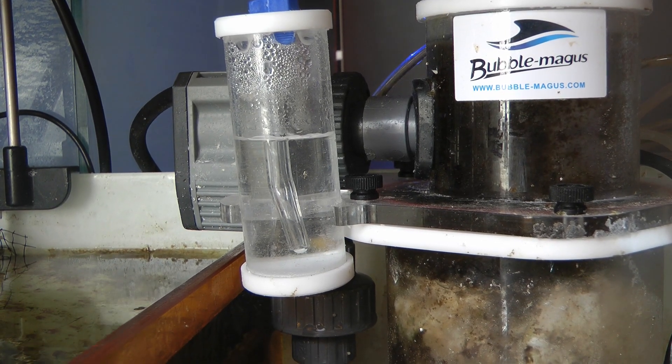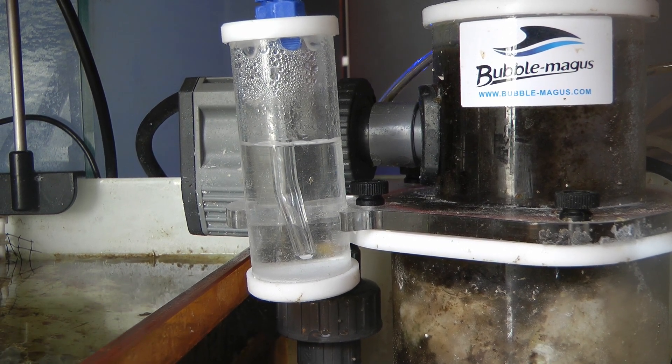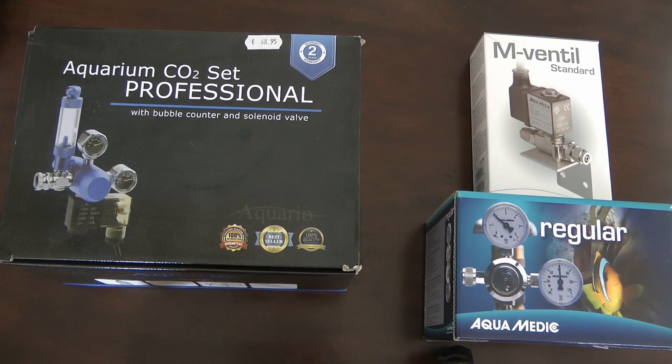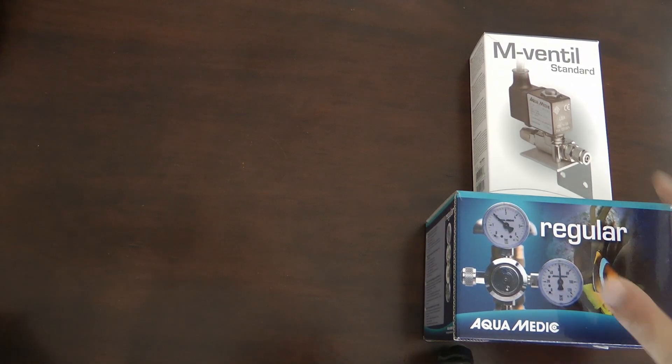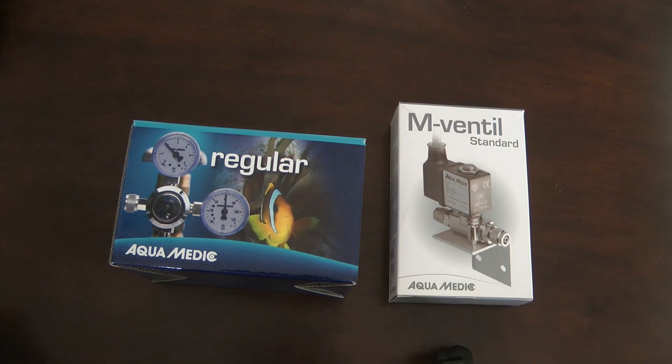Regardless of how you run a calcium reactor, you need to have a reliable and precise control on the CO2. I then got the Aquamedic pressure regulator for precise control of CO2, and the shut-off valve for CO2, the M-Ventil standard. And it's been extremely precise and reliable.